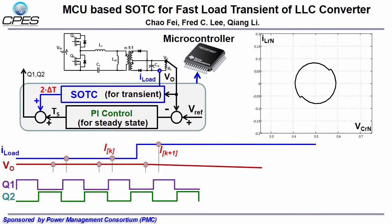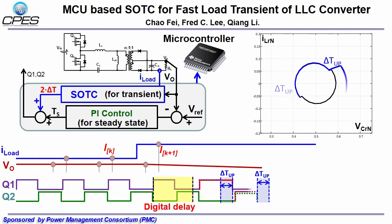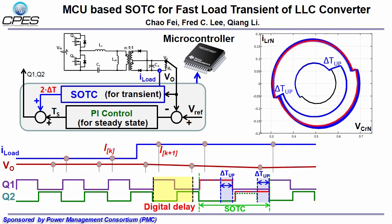In SOTC for fast load transient response, the output voltage and load current are sampled every switching cycle. When a load step-up is sampled by the controller, there will be a digital delay caused by calculation. In the next switching cycle, the deadtime from PI control is increased by delta T, and resonant tank energy will expand. Over another switching cycle, the resonant tank energy is also expanded. These two steps are called SOTC, and the resonant tank energy is settled to around the final destination. On the next sampling, there is no load transient, and PI control takes over to eliminate the steady-state error. After program optimization, this method supports up to a maximum of 250 kHz switching frequency.